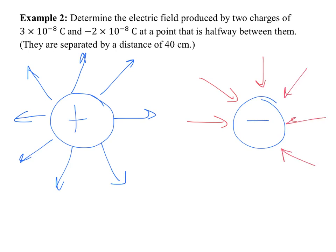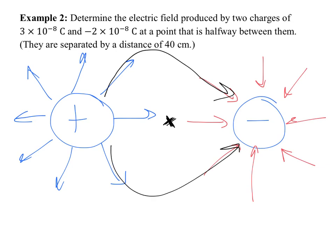Remember that field lines end on the negative and start on the positive. If you wanted to find the force or the field strength halfway between them, you're looking at some point in space right here — put a little x in the middle. The positive source wants to have field lines drawn away, so these lines continue like we saw. Away from the positive and toward the negative means we're going to be moving everything from the positive to the negative.